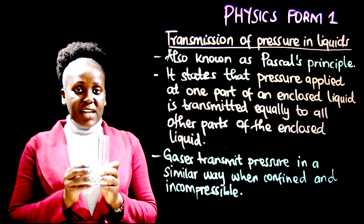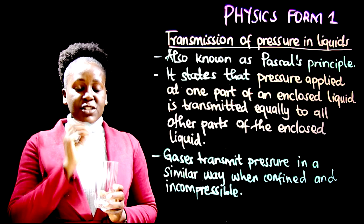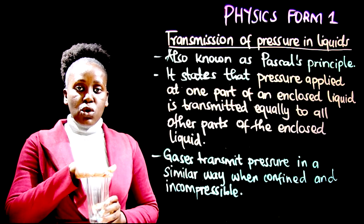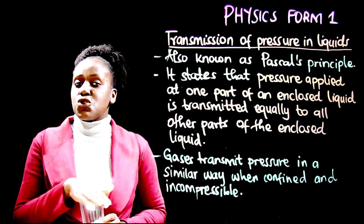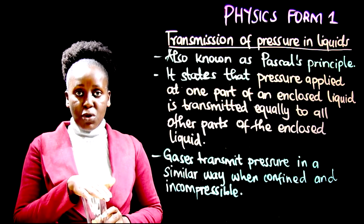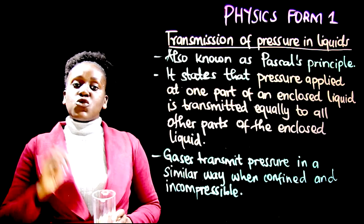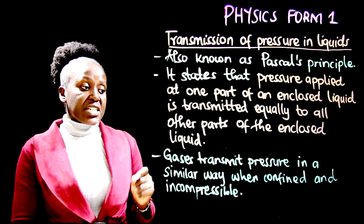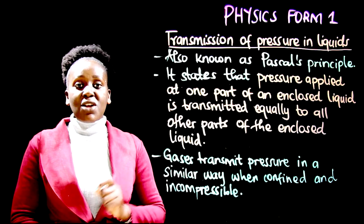Let us take this glass to be our container. This glass has air in it, but the air inside is not compressed to the maximum. If you close it and continue applying pressure, the air will continue to occupy the smallest volume possible. But you will get to a point where it cannot be compressed any further. At that point, the gas is incompressible and can obey the principle of transmission of pressure.